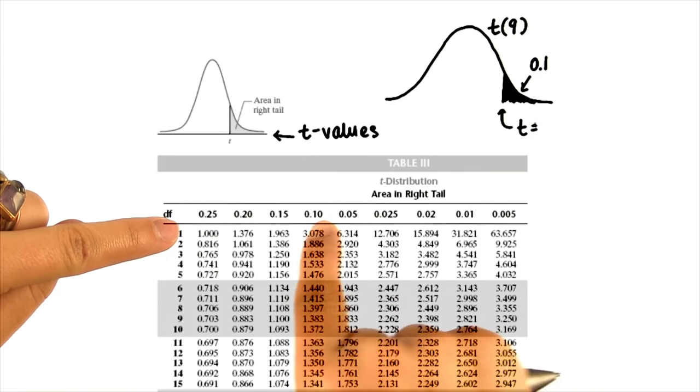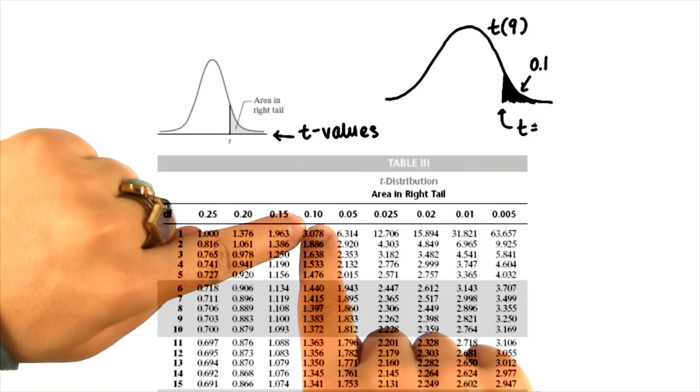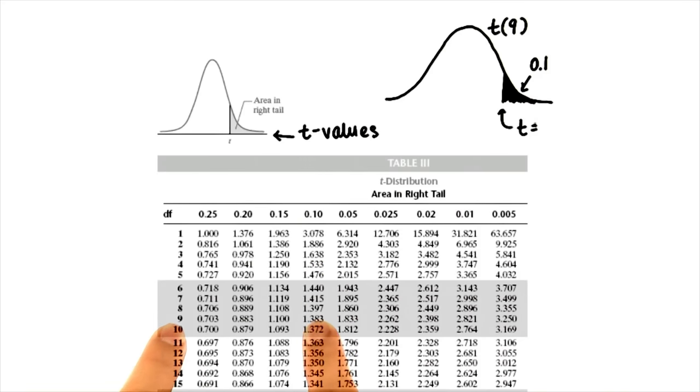Well here, in the tails, we look for 0.1. And with 9 degrees of freedom, we see that the t critical value is 1.383.